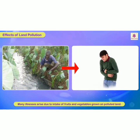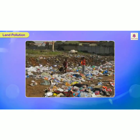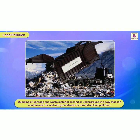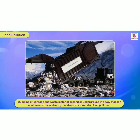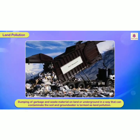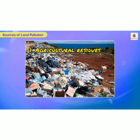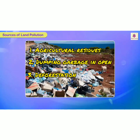I hope you all have understood what is land pollution, what are the causes, and what are the effects. Let's revise. Land pollution: dumping of garbage and other waste material on land or underground in a way that contaminates the soil and groundwater. Sources of land pollution: first, agricultural residues like pesticides and fertilizers; second, dumping garbage in the open; third, deforestation — cutting down the trees; and fourth, industrial wastage.